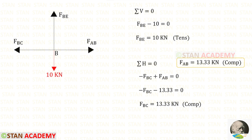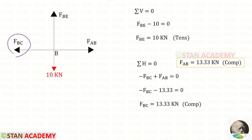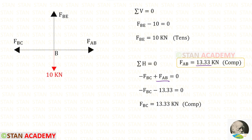Now let us apply sigma V equals 0. FBC is acting towards the left side so it will be negative. FAB is acting towards the right side so it will be positive. We know the value of FAB is 13.33 and it is compressive. Since it is compressive, we have to apply it as negative. For FBC, we will get a negative value, that means it is compressive.